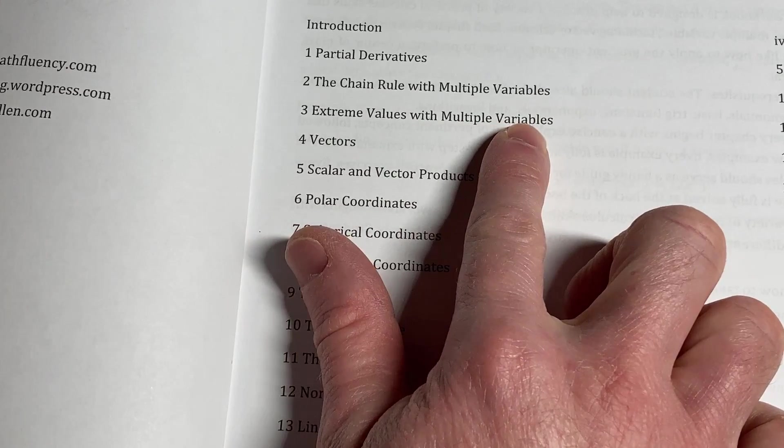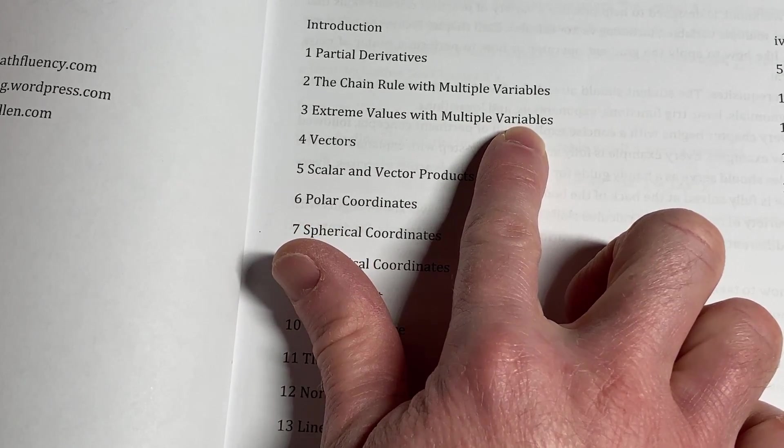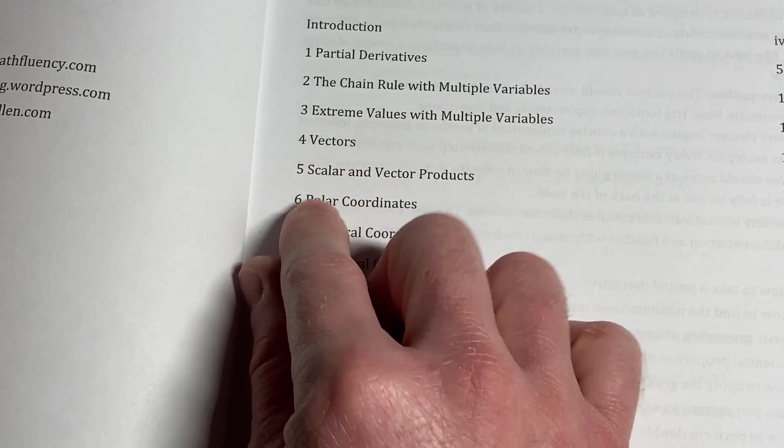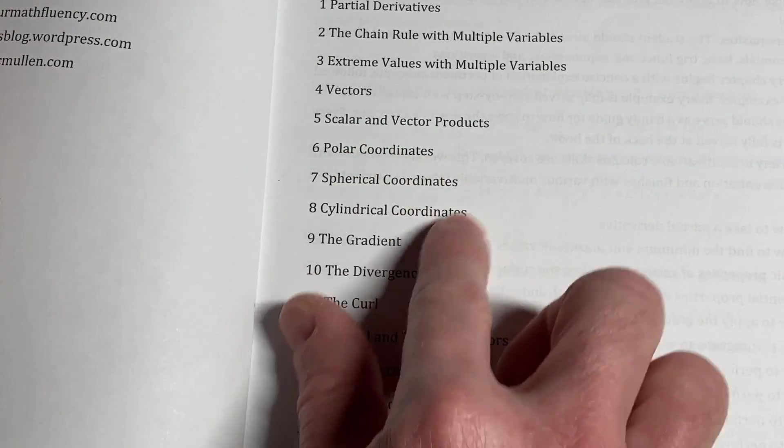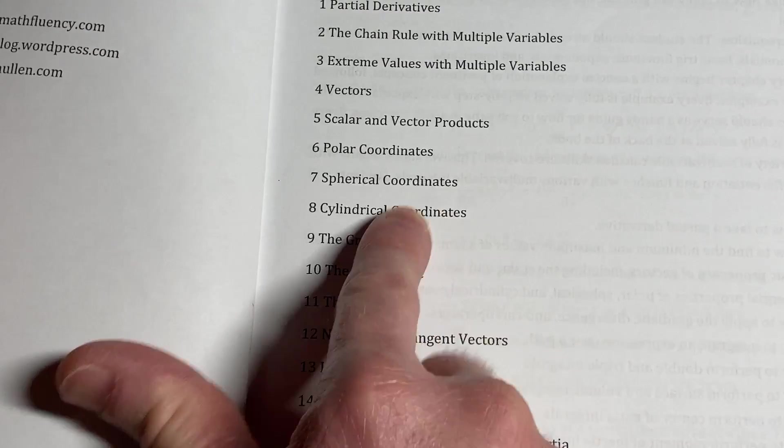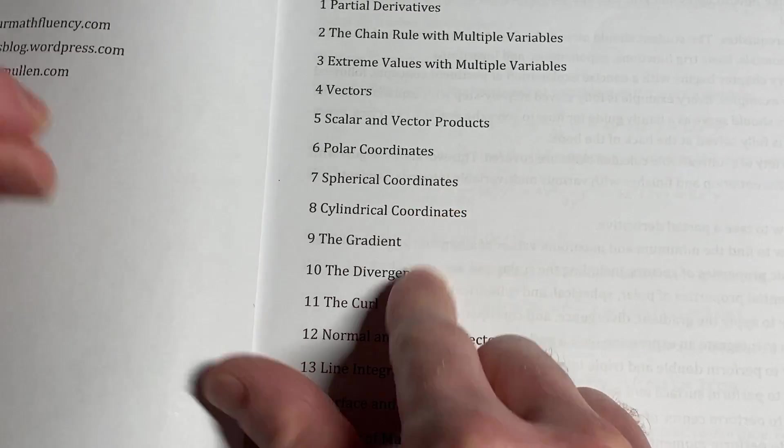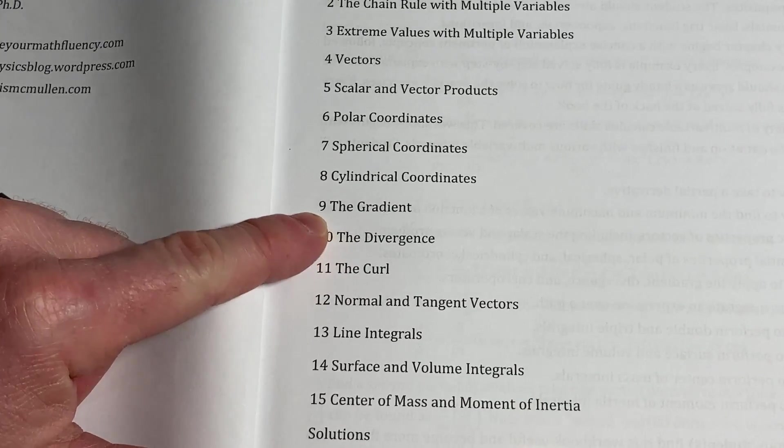Extreme values of multiple variables. Again, another example of where the book shines. Vectors, pretty easy. Scalar and vector products, pretty easy. Polar coordinates, pretty easy. Spherical and cylindrical, again, pretty easy. But again, I feel the examples here do add value. The gradient, again, pretty easy stuff.